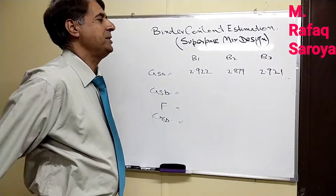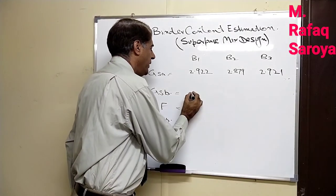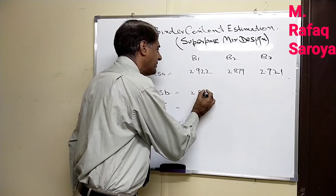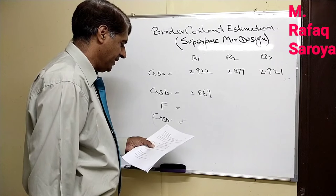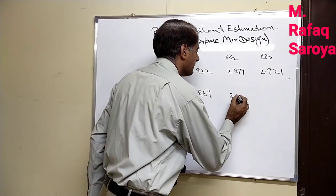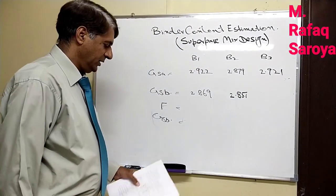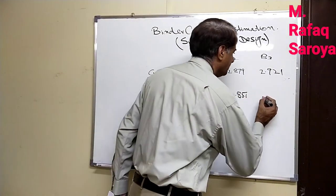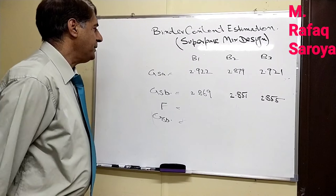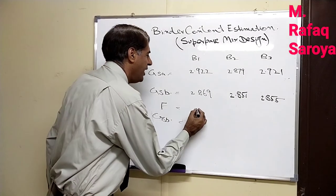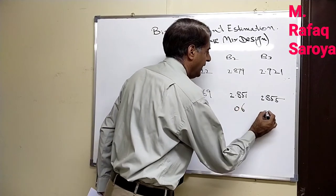Similarly, this is our value of GSB for the first one: 2.869, 2.851, and 2.855. And absorption factor which I have already told you is taken 0.6, 0.6, and 0.6. Now these values are given over here.